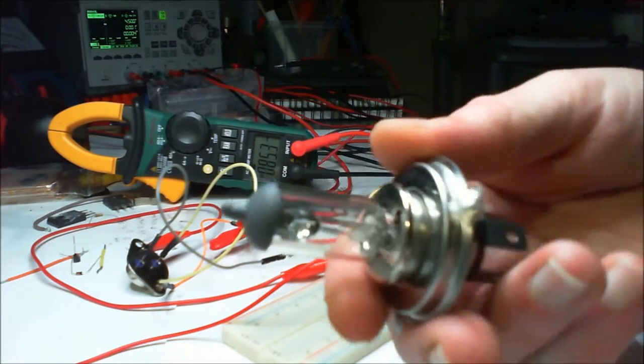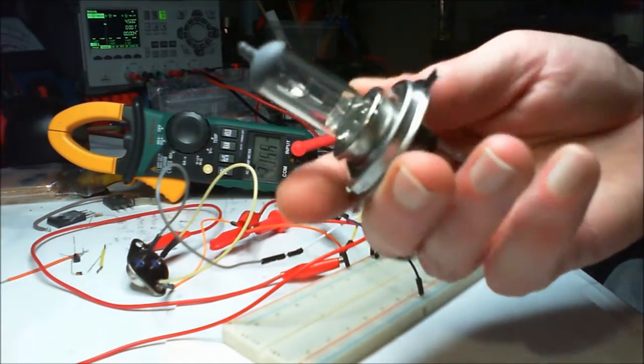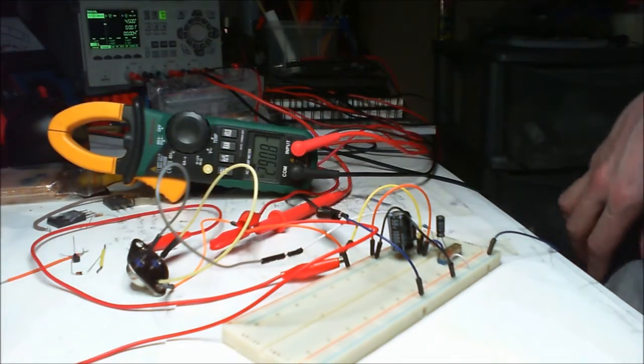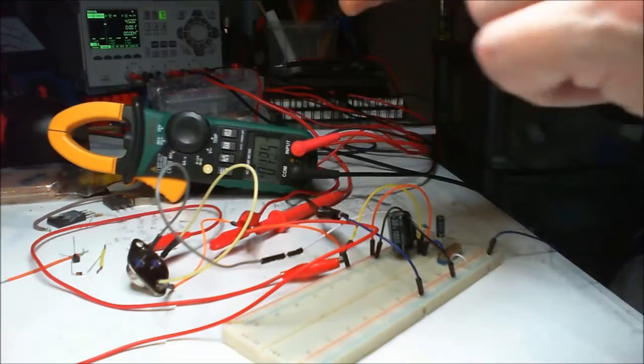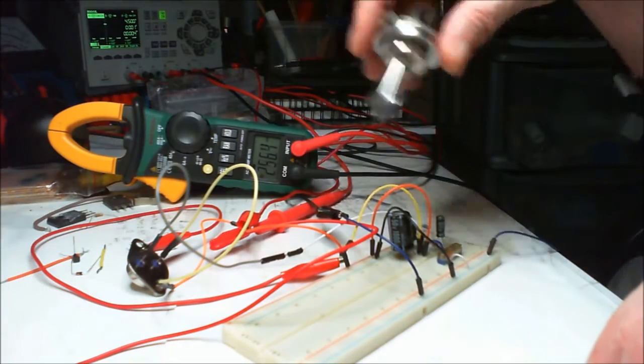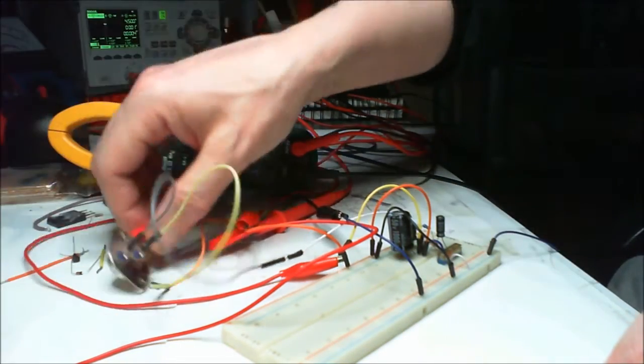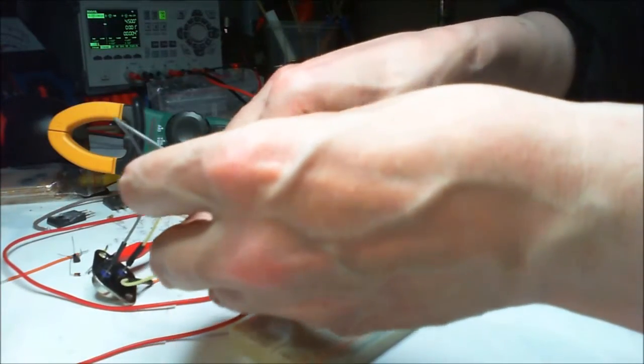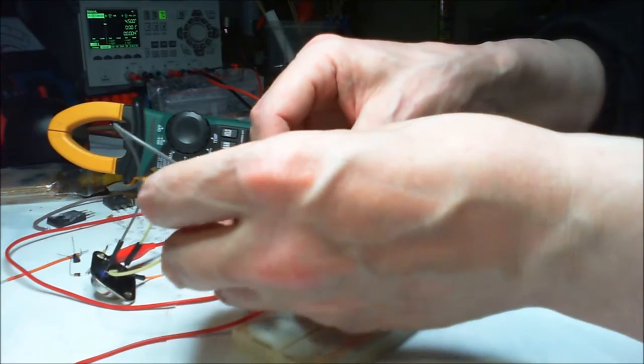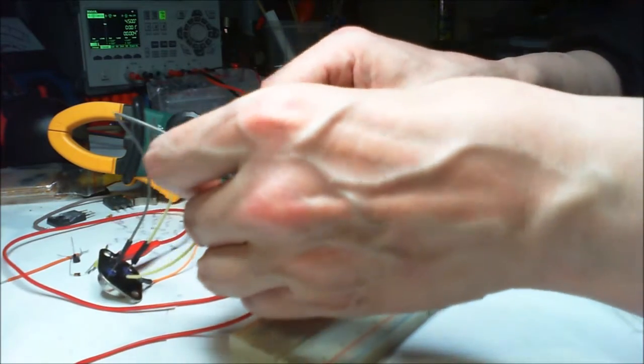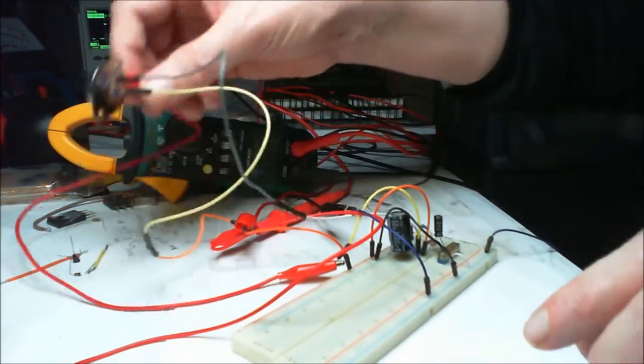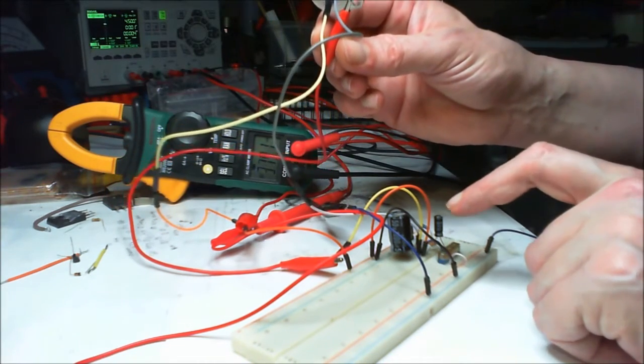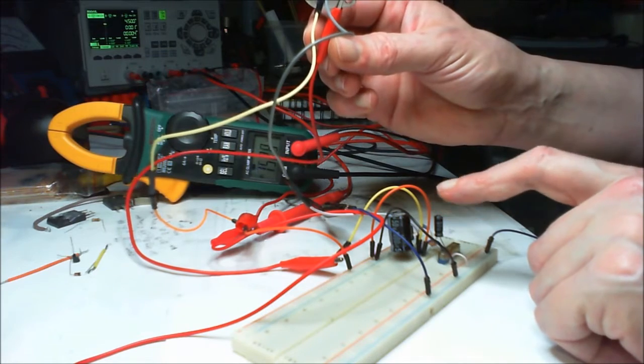You need to have a heatsink on this, especially when pulling this sort of amperage. This is a car 55 watt headlamp bulb so I can really get a load, but it makes it glow red inside. I've restricted it, and there's no heatsink on here. I've already got these little tiny hookup wires connecting those together.